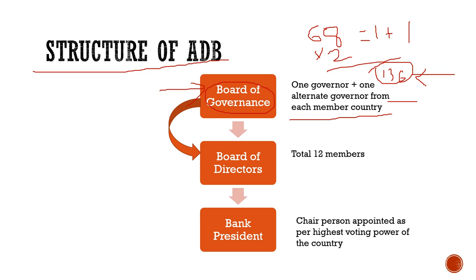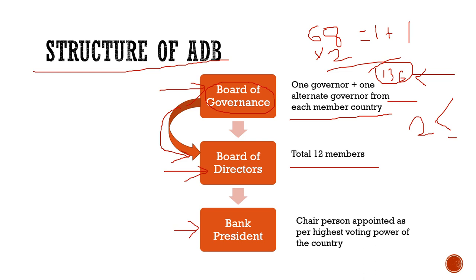From India, there are two governors: the main governor is Nirmala Sitaraman and the alternate governor is Atanu Chakraborty. Then comes the Board of Directors — there are total 12 members in the Board of Directors, appointed by the Board of Governors. Then comes the Bank President, who is the chairperson appointed as per the highest voting power of the country.